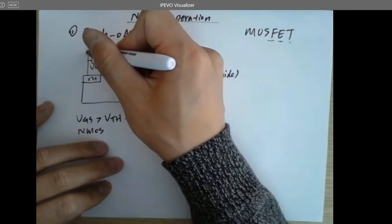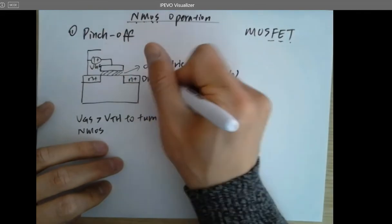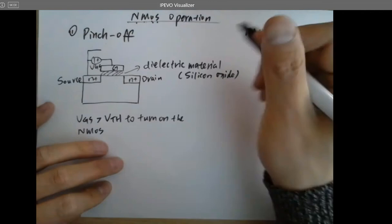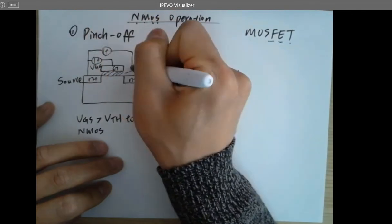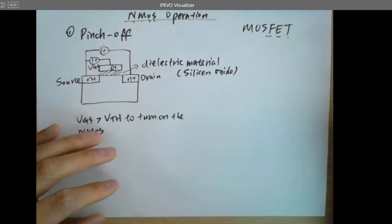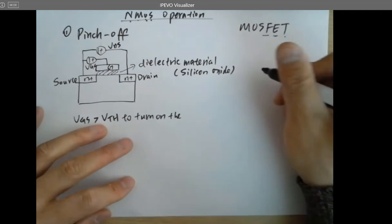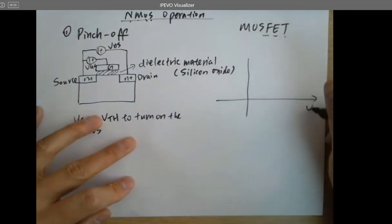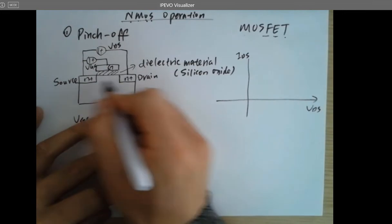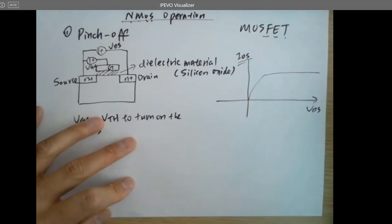There's another requirement: you need a voltage drop across the drain and the source. Here's the drain terminal D, here's the source terminal S, and here's the gate terminal. You need another voltage drop across these drain and source terminals to allow current flow into the channel. That's called VDS. That's the IV curve — VDS versus IDS. The current flow through D to S is called IDS.